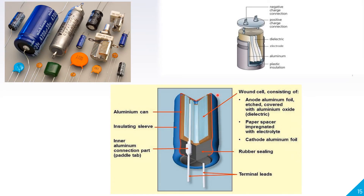Different capacitors shown include electrolytic capacitors, ceramic capacitors, and tantalum capacitors. In the cross-sectional view of a capacitor, two metallic plates or foils are separated by the dielectric. Paper is used as a spacer, rubber sealing is used as insulation, and sleeves are insulated.